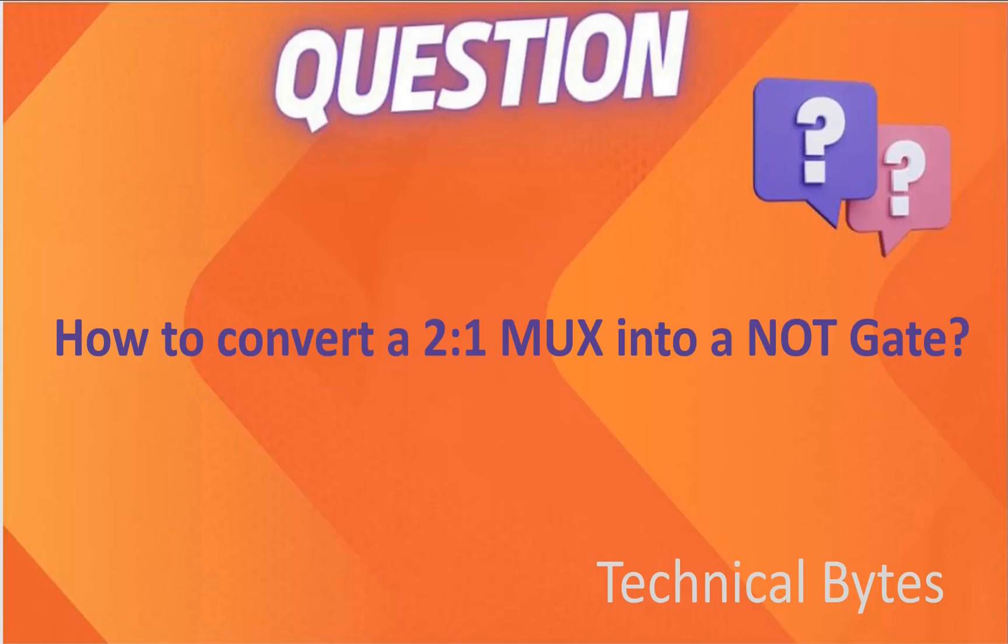The question is: how to convert a 2 to 1 multiplexer into a NOT gate? Let me reveal its solution.